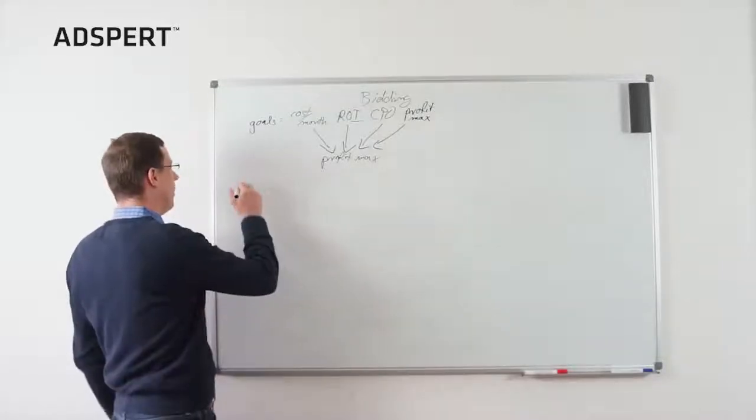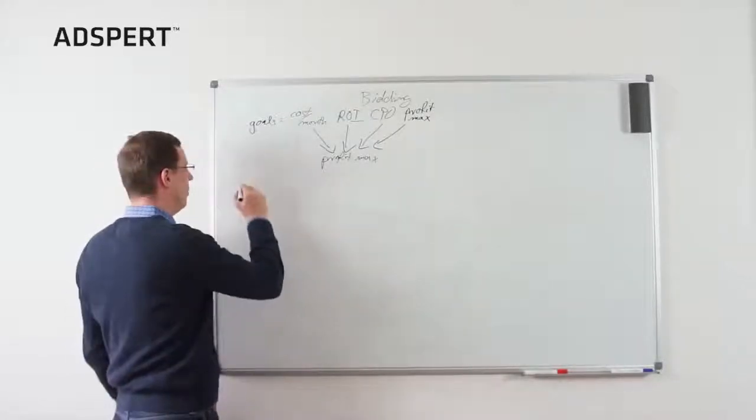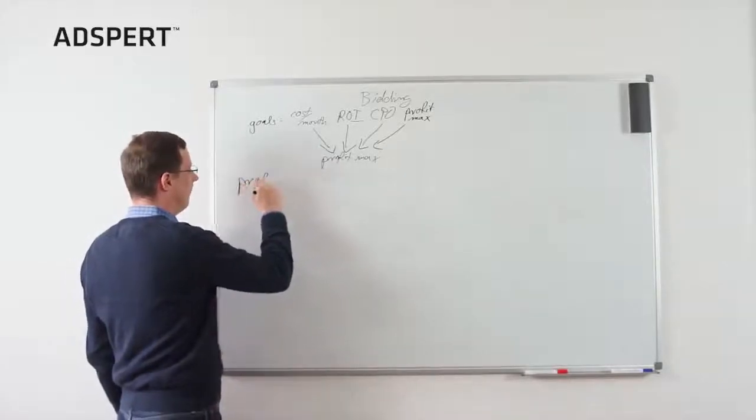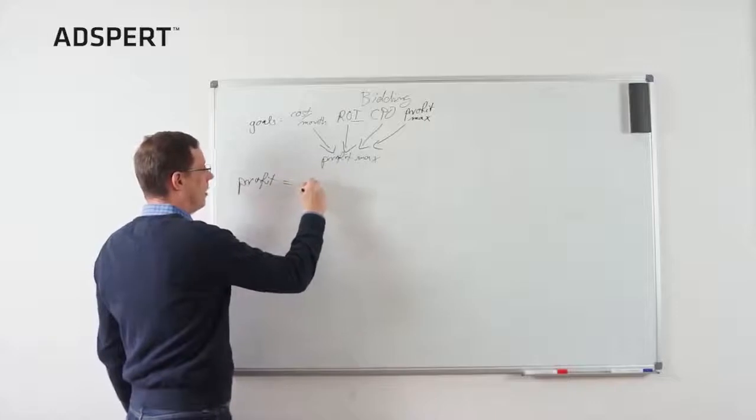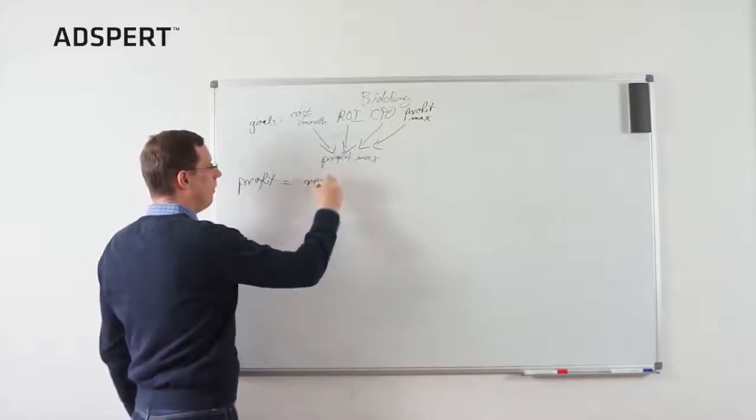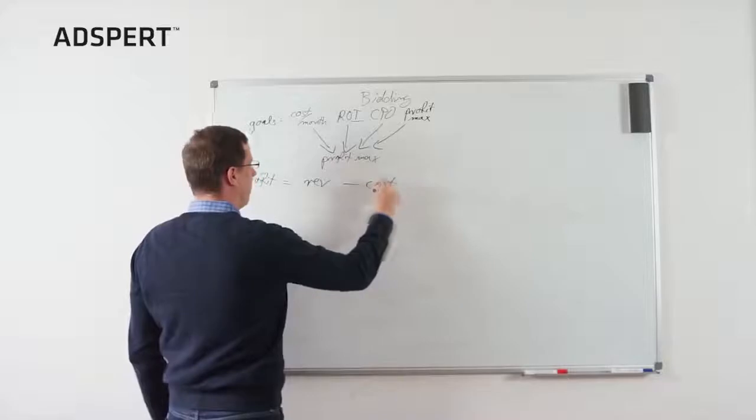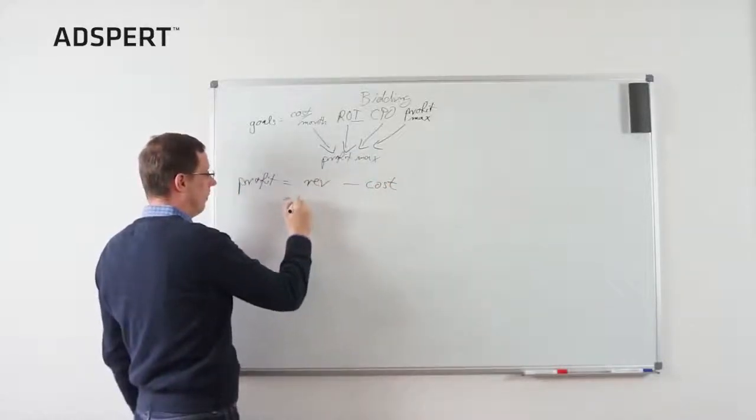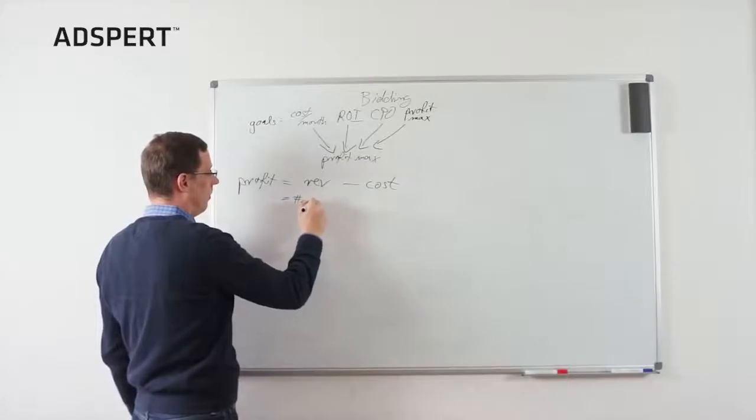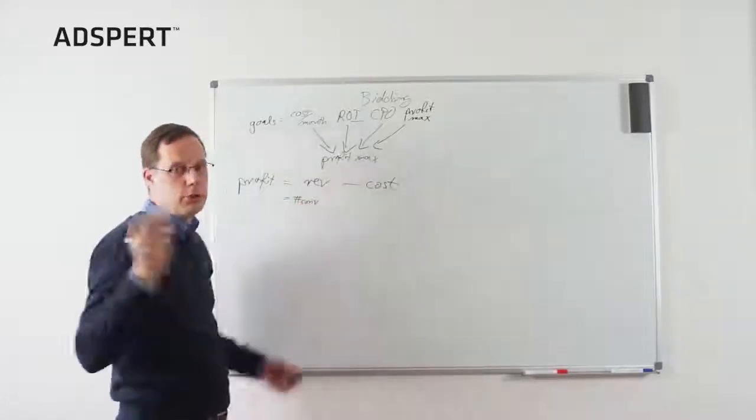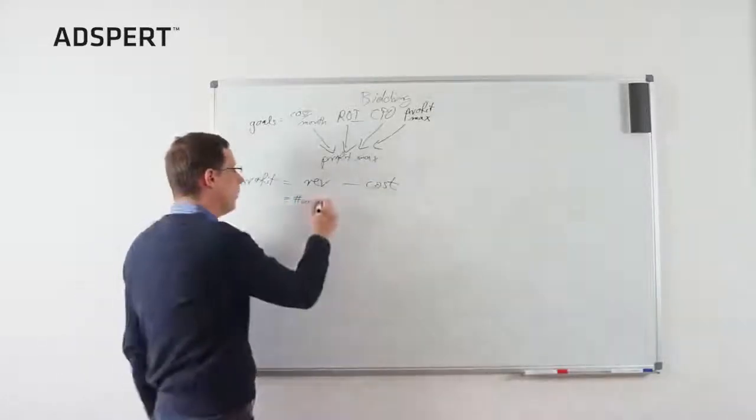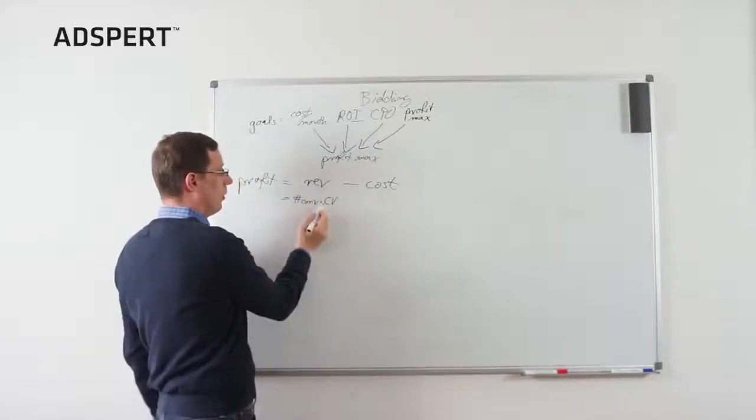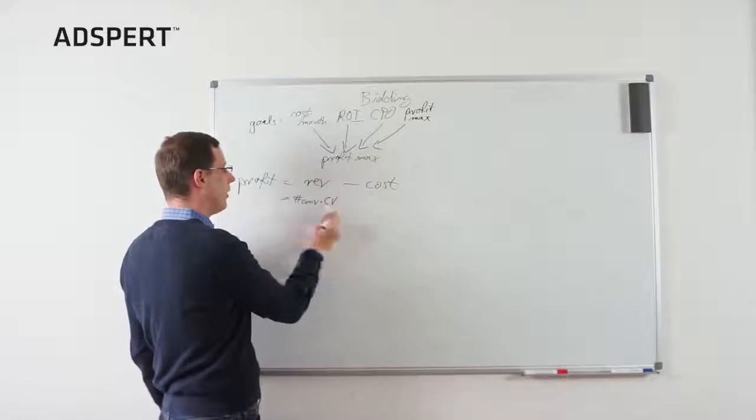And yeah, some formulas, but only three lines approximately. So profit is revenue minus cost. Revenue usually is generated by conversions. So each conversion generates a revenue. The revenue is a conversion value. The conversion value is the revenue per conversion, and that's the total revenue.